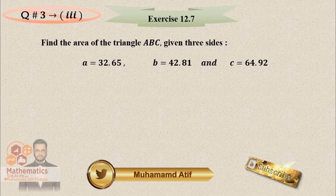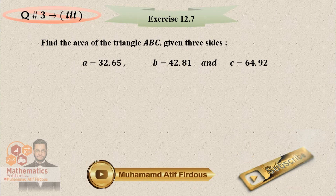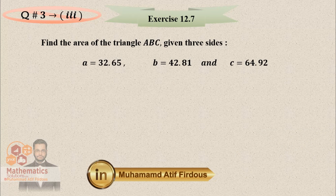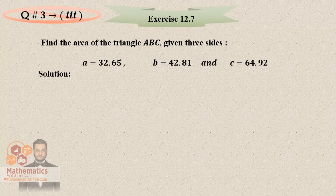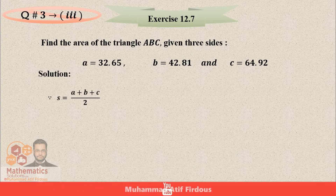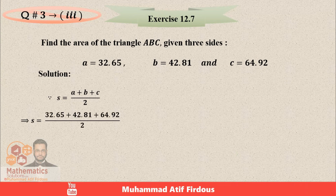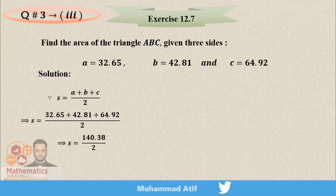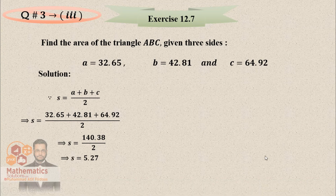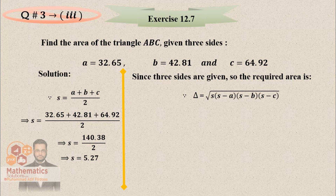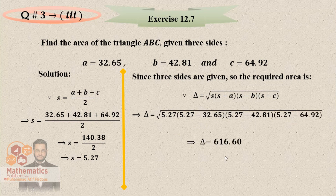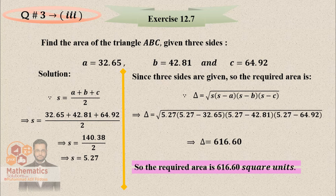For the second part of question 3, again find s = (a + b + c) / 2, then apply delta = √[s(s−a)(s−b)(s−c)]. The answer comes out to 64.92. Write your answer in square units. A small box presentation will look good for your solution.